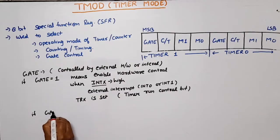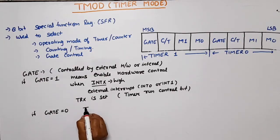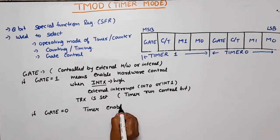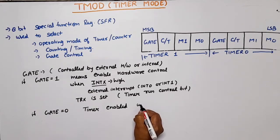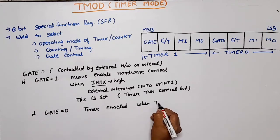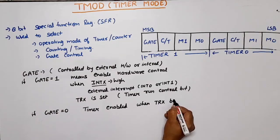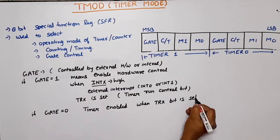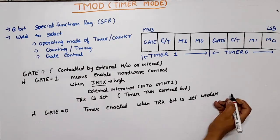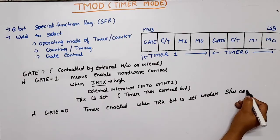If GATE is equal to 0, in this case the timer is enabled when TR x bit is set under software control. This means it happens through the program. This is the function of gate.